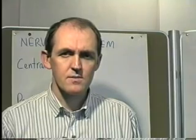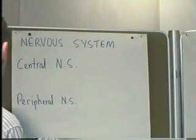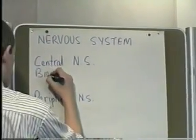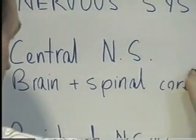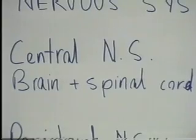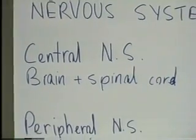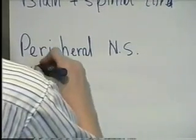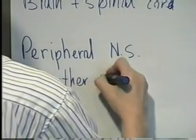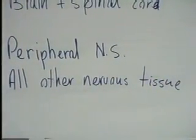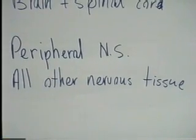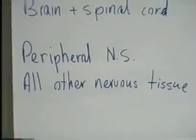The central nervous system comprises the brain and the spinal cord. The peripheral nervous system comprises all of the rest. So central nervous system: brain and spinal cord. The peripheral nervous system is all of the nervous tissue outside of that.